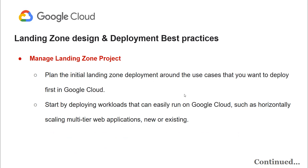Start by planning to deploy the use cases that you want to move to Google Cloud first. It's best to begin with the workloads that can easily run on Google Cloud, like multi-tier web applications that can scale horizontally. These workloads can be new or existing.